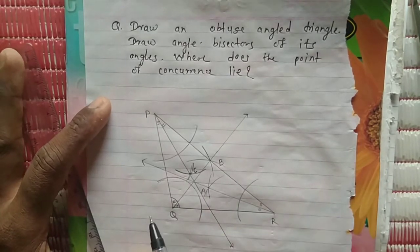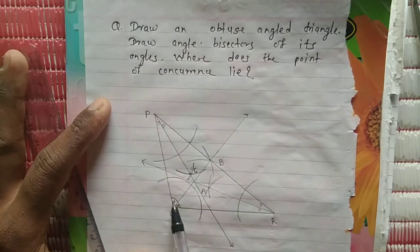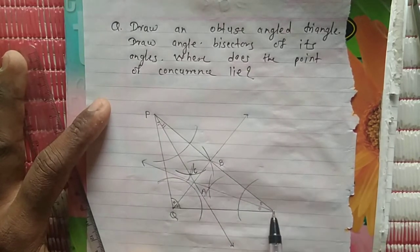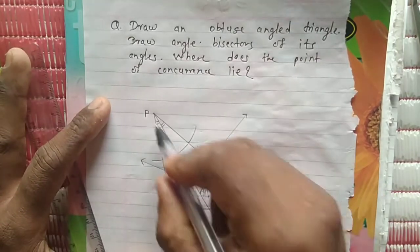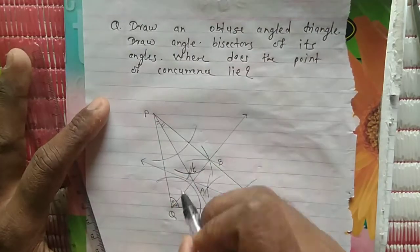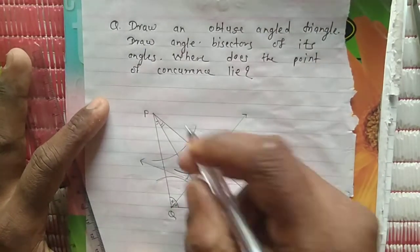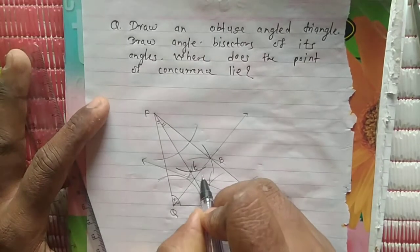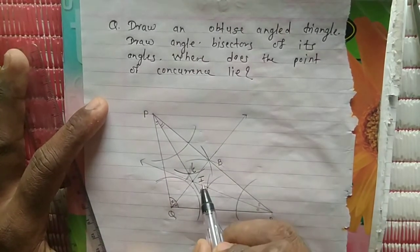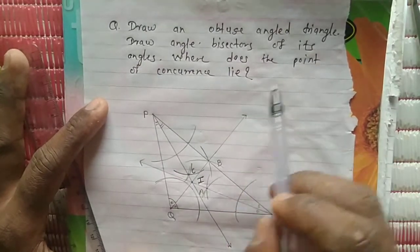So in this figure: PC is the angle bisector of angle P, QB is the angle bisector of angle Q, and RA is the angle bisector of angle R. These three angle bisectors meet at one point — the point of concurrence. We name it as I, which means the incenter.